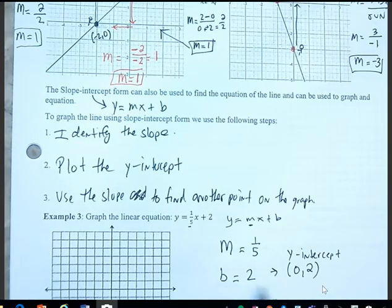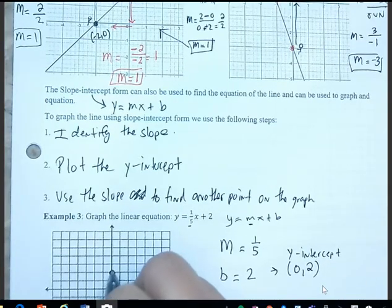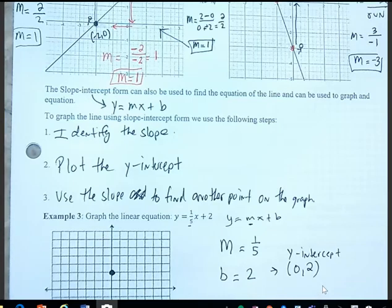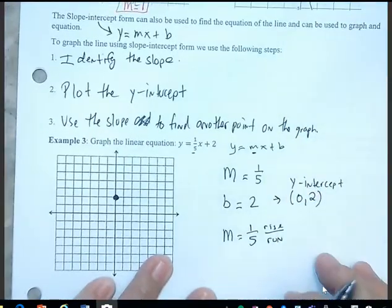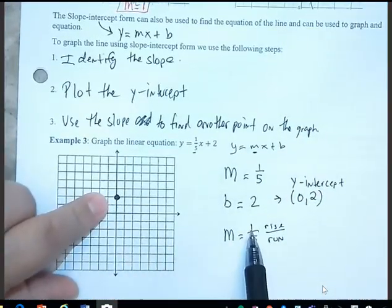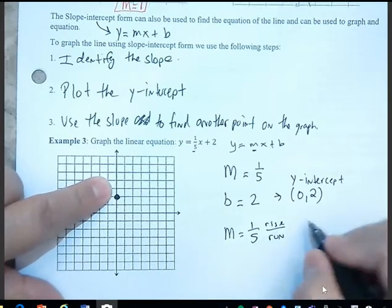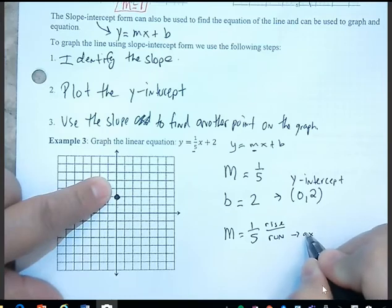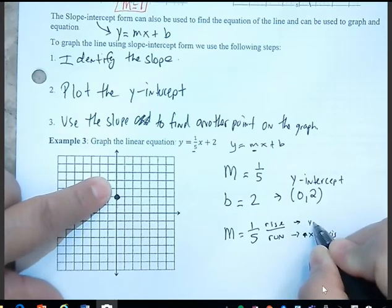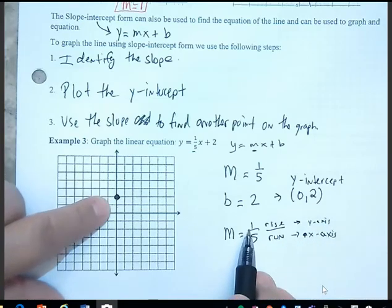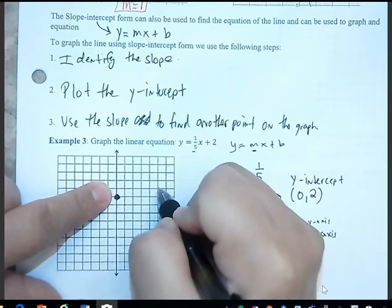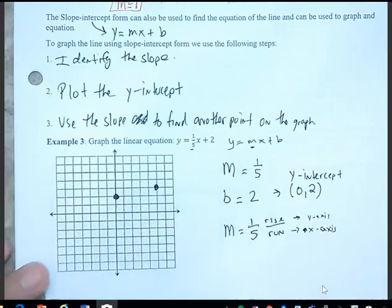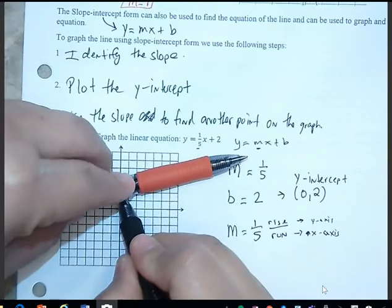Now we plot the y-intercept, then use the slope to find another point. The slope is the rise over run — rise is the numerator and run is the denominator. From the y-intercept, the slope 1/5 tells us to rise 1 and run 5. Since both are positive, we move up one unit and to the right five units. That gives us our next point, and we can sketch the graph by connecting these two dots.